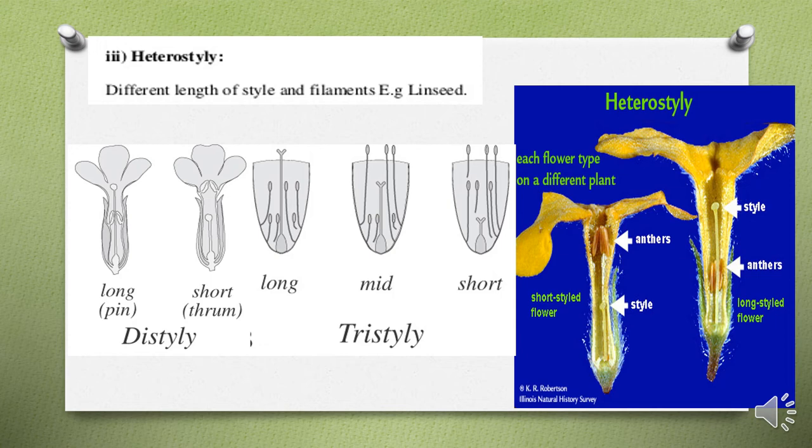Similarly, when the style is too long, anthers are present near the base of the style, and pollens from that anther are also unable to fertilize the stigma of the same flower, thus facilitating cross-pollination. The next factor facilitating cross-pollination is hercogamy — the presence of a physical barrier or obstacle between the anther and the stigma.